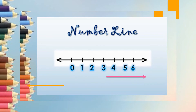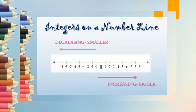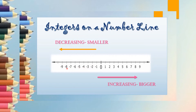Now, if we have to draw integers on a number line, then along with the positive numbers, we have to draw negative numbers also. Same method — you will just extend it. Earlier you were drawing only positive numbers like 1, 2, 3, 4, 5, 6 and so on. Now you will draw all the negative numbers on the left hand side of 0, and they will be written as minus 1, minus 2, minus 3, minus 4, and so on.